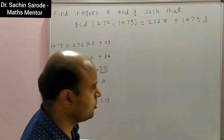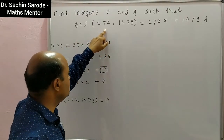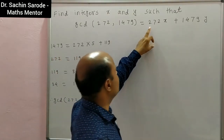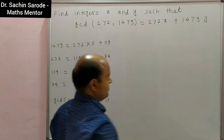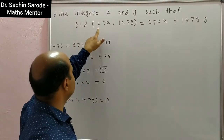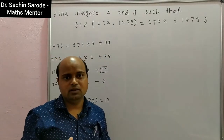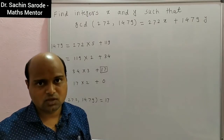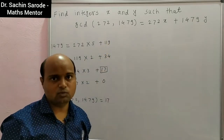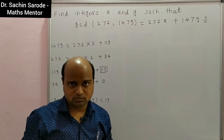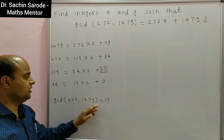Now we will see another problem. Find integers x and y such that GCD of 272 and 1479 is equal to 272x + 1479y. Here we have to find x and y. Firstly, we find GCD of 272 and 1479. I have written directly that GCD of 272 and 1479 is 17.